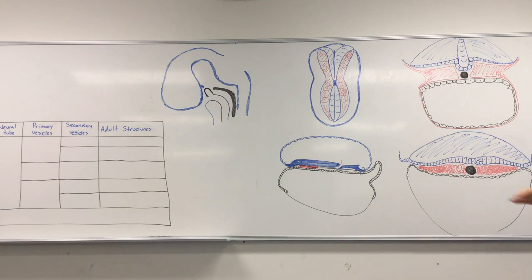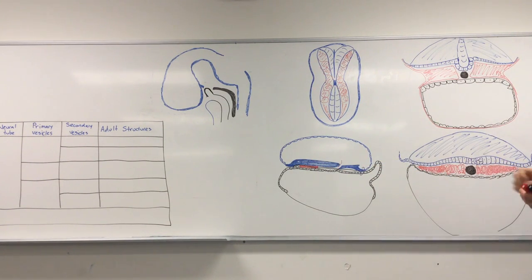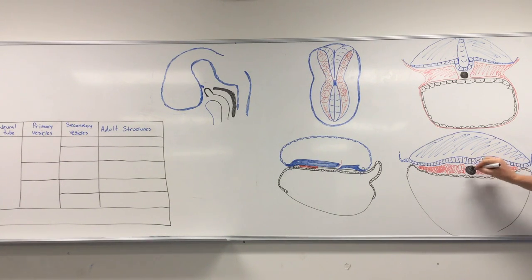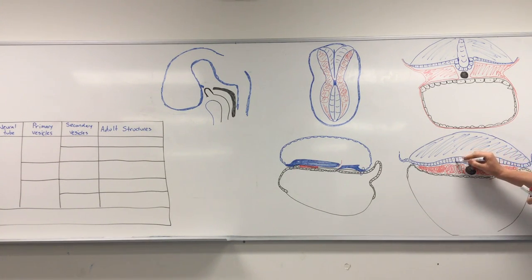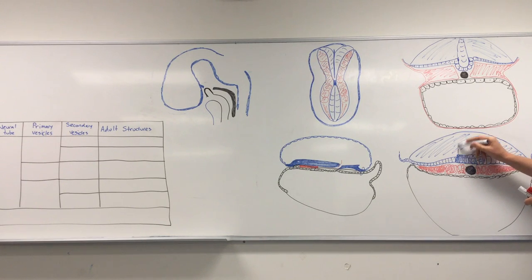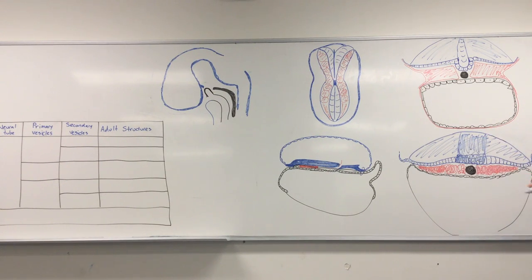Towards the end of the third week, we've created the mesoderm, and what happens down the midline of the embryo is a big bar of tissue known as the notochord. The notochord gives the symmetry of the embryo, allowing it to have a right and left side running right down the middle. In about the third week, the notochord will start to cause a change in the thickness of the ectoderm right adjacent to it, causing a neural plate to form — a big thickening.